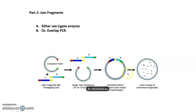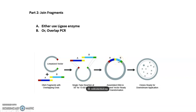I will explain each method in individual videos — one for ligase enzyme and one for overlap PCR. Here is just a brief overview of how the ligase enzyme works. This enzyme allows you to join the complementary parts of different fragments. This is Fragment A and Fragment B, and this is the overlap region. The enzyme joins the complementary regions, making one single fragment that is then ready to be inserted into a vector.